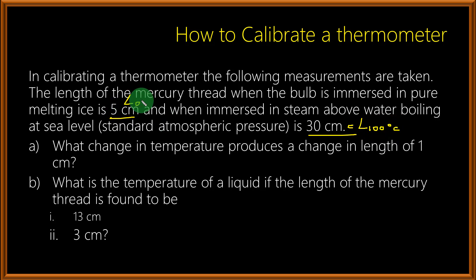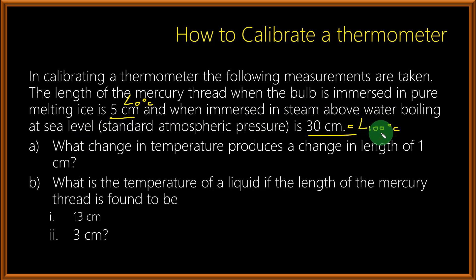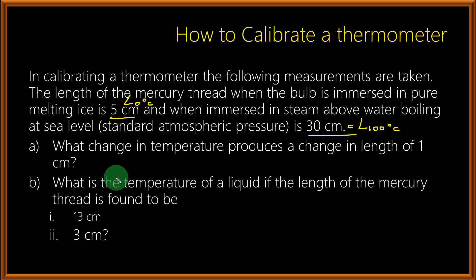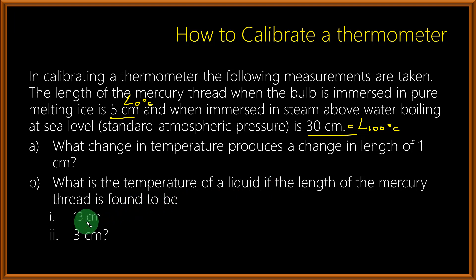Because this is degrees Celsius, we know that pure ice melts at 0 degrees Celsius and the temperature of steam above water boiling at sea level is 100 degrees Celsius. Part A requires us to calculate what change in temperature produces a change in length of 1 cm. In Part B, we are asked: what is the temperature of a liquid if the length of the mercury thread is found to be (1) 13 cm, and (2) 3 cm?